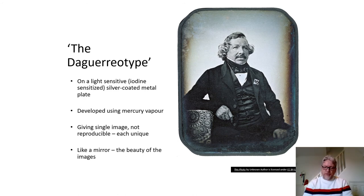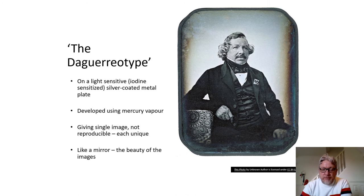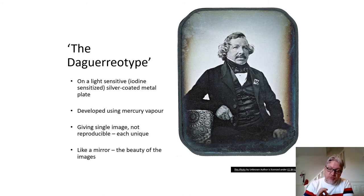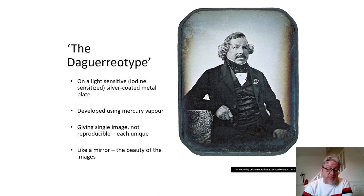The next movement in improving the process was the daguerreotype — using a light-sensitive silver-coated metal plate developed using mercury vapour, which would help fix the image. It gave a single image that wasn't reproducible — you couldn't take this and reproduce from it, so each one was unique, quite like a mirror. Much better in terms of image quality — much prettier, much better images — a real step forward. But you're still dealing with sheets of metal and chemicals, especially mercury vapour, which you don't want to be inhaling because it'll kill you. Still a very scientific, industrial process with no democratisation of photography — you still had to be highly skilled to do this kind of work.